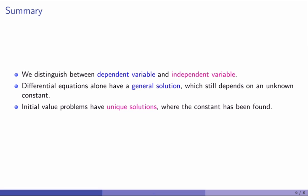Let me summarize. We distinguish between the dependent variable — usually y or n — and the independent variable, which is often t or x. A differential equation alone has a general solution which still depends on an unknown constant, whereas the initial value problem has a unique solution where the constant has been found.